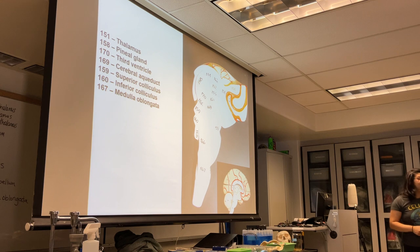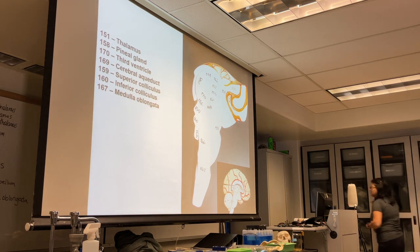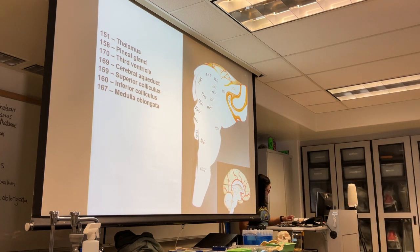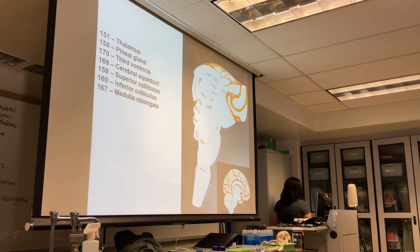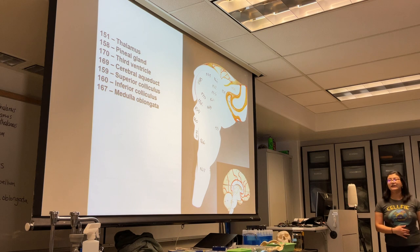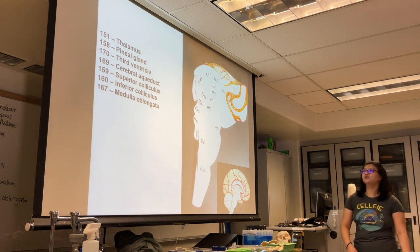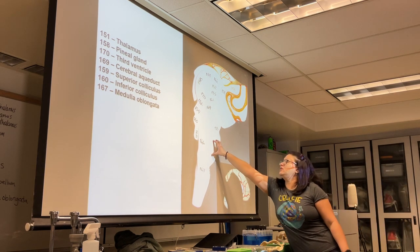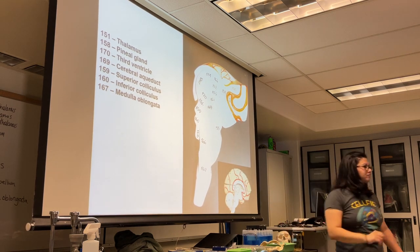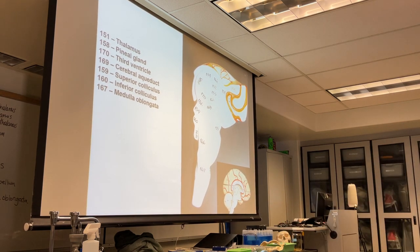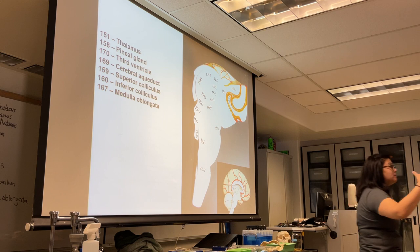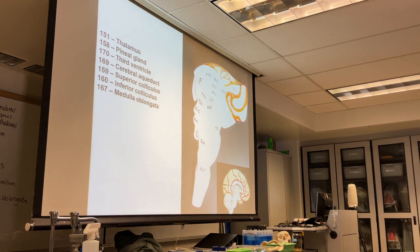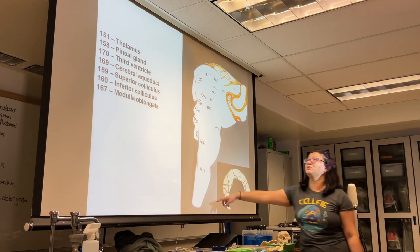The pons is this big bulge — a relay center to the cerebellum. The medulla oblongata is essentially the top of the spinal cord; it's a relay center to the pons and the thalamus.